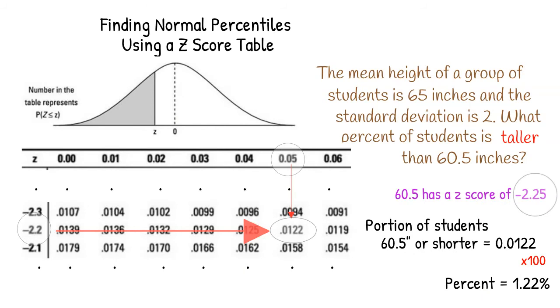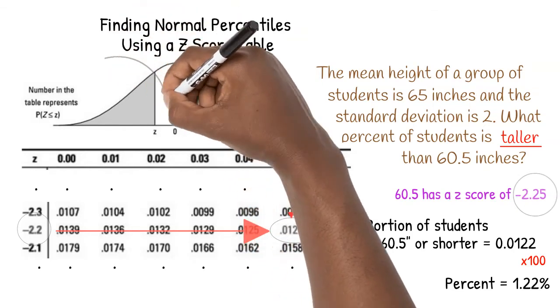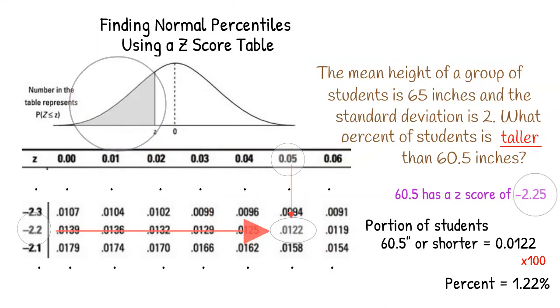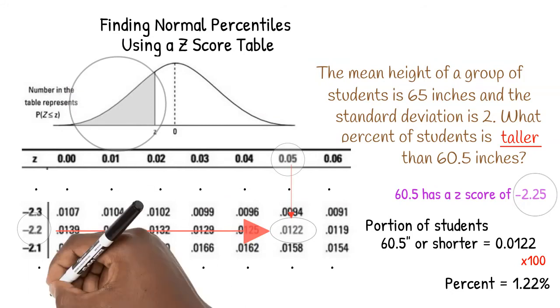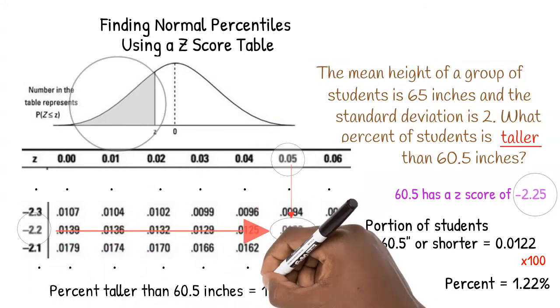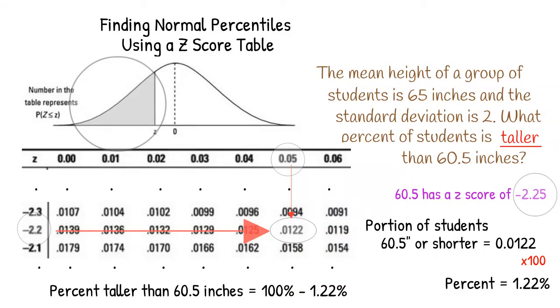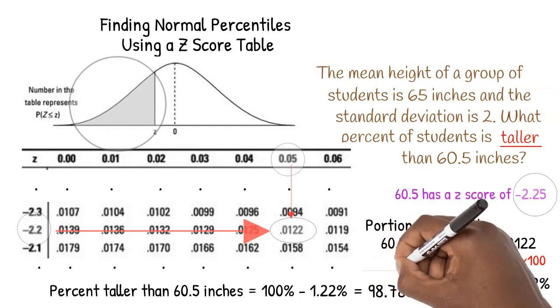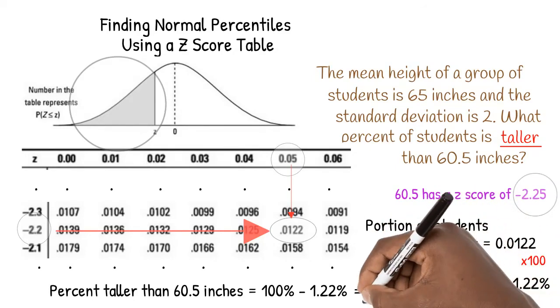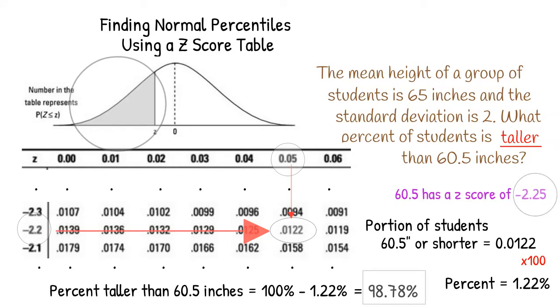If instead you were asked what percent of students is taller than 60.5 inches, there is an additional step. The table gives us the portion less than or equal to the given value. To find the portion taller than 60.5 inches, we have to subtract our previous answer from 100 percent to get the remaining students. 100 percent minus 1.22 percent equals 98.78 percent. 98.78 percent of students is taller than 60.5 inches.